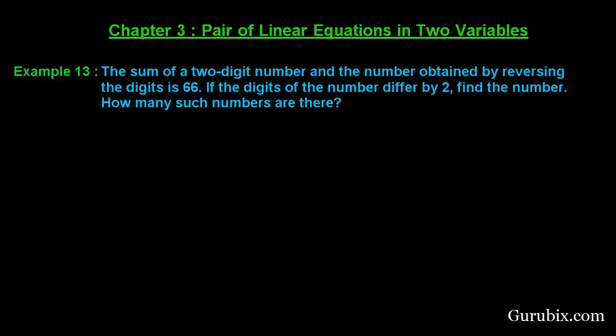Welcome friends. Let us solve example number 13 of chapter 3. The problem is: the sum of a two-digit number and the number obtained by reversing the digits is 66. If the digits of the number differ by 2, find the number and how many such numbers there are. This is an application of pair of linear equations in two variables.